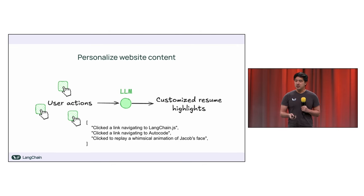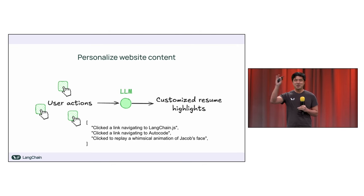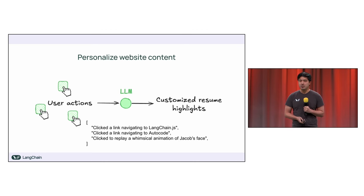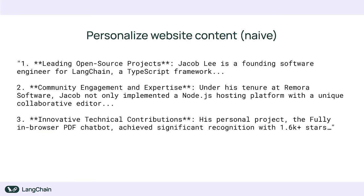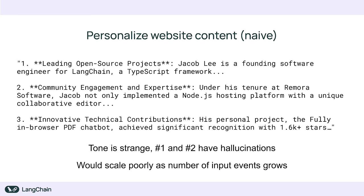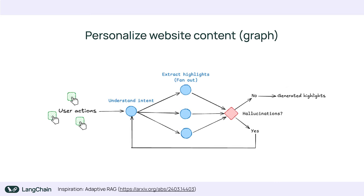Here are some example actions a user might take: I mentioned I maintain Langchain.js, I mentioned I work at AutoCode (my previous company), and I also have a whimsical animation on my face — that'll make sense in a moment. If you had a naive approach of just passing these events to an LLM along with my resume content — using Phi 3.5 through WebLLM — you get something that looks okay at first, but if you look more closely, it sounds a little weird, very impersonal. And actually, one and two have hallucinations. I did maintain a Node.js hosting platform, but not during my tenure at Remora Software. This would all scale poorly as the number of events grows.